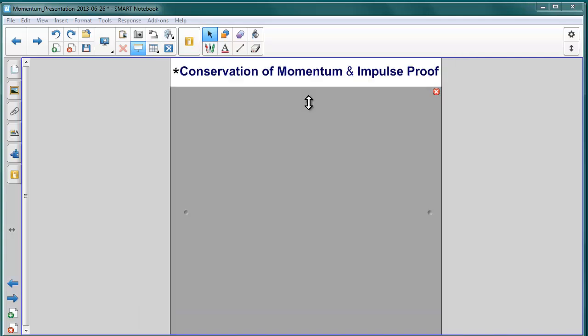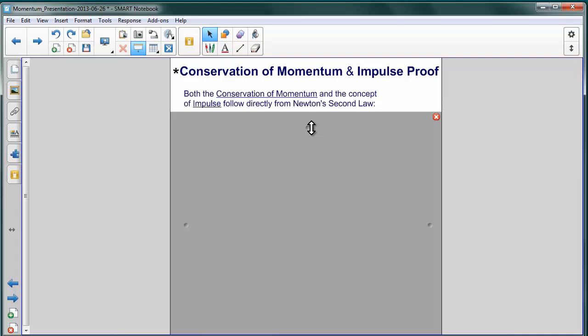This slide is optional, and really for those that are interested in seeing more of a proof of the conservation of momentum. It's a little bit more algebraic, and if that's your interest, this is a great place to go. So, let's start off, and we need to realize that both the conservation of momentum and the concept of impulse actually follow from Newton's second law.